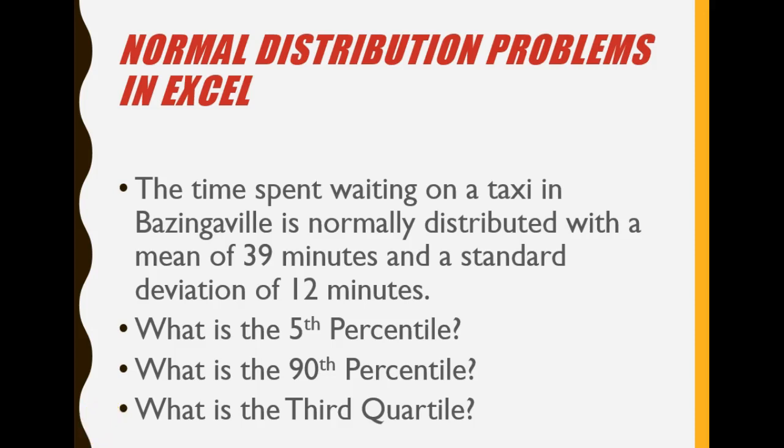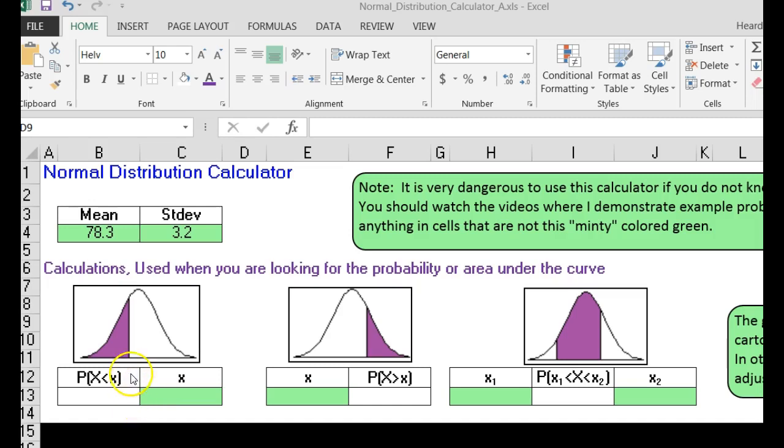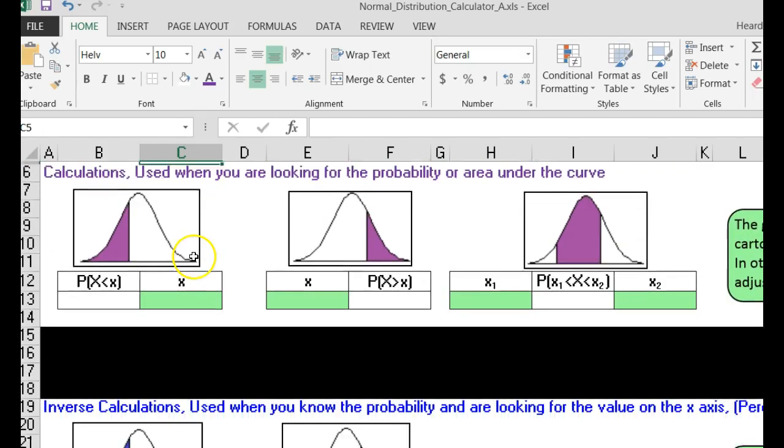Not a problem. Let's go to the calculator. First of all, I'm going to put in my mean of 39 minutes, hit the enter button. Standard deviation of 12 minutes, hit the enter button. Scroll down.